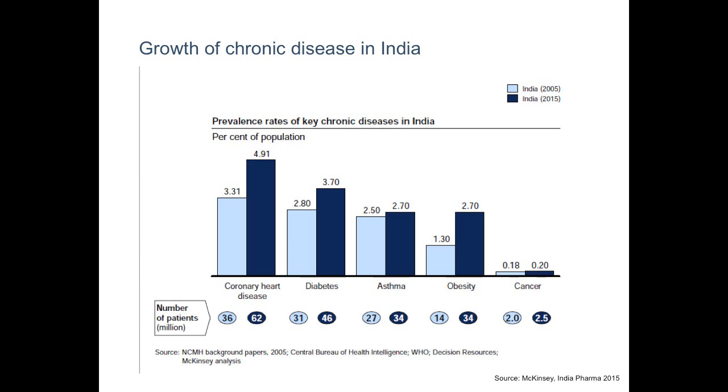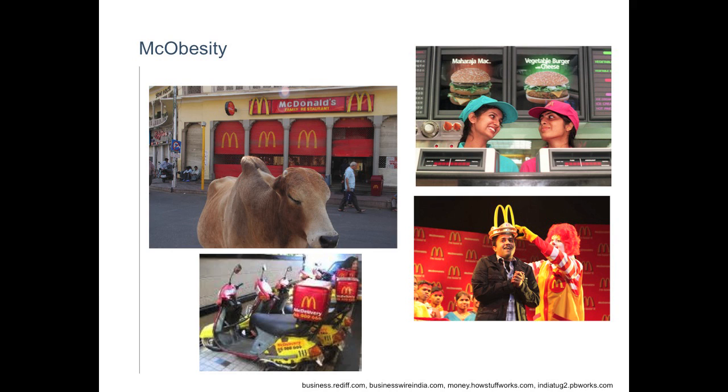This speaks to the growth of chronic conditions in India. As people are doing more sedentary jobs in information technology or finance, there's less physical activity and lifestyle changes in food habits. That has led to conditions like coronary artery disease and diabetes growing very rapidly. Part of the reason is a change in diet. The food habits have changed dramatically in India, and that contributes to some of these diseases.